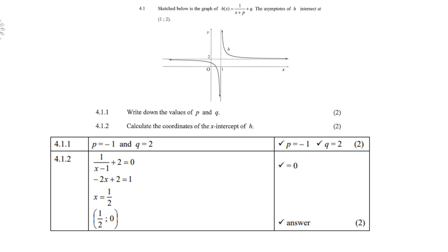For 4.1.2, the coordinates of the x-intercept of h: replace p with −1 and q with 2, then let y = 0, because on the x-axis the y-value is always 0. Simplify by multiplying through by (x − 1), and you end up with −2x + 2 = 1. Taking 2 to the right-hand side gives x = 1/2. So the coordinates of the x-intercept of h are (1/2, 0).